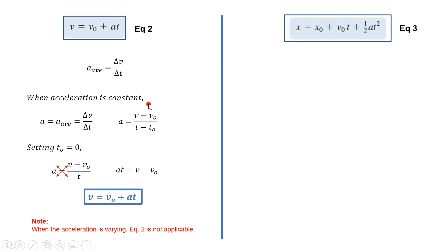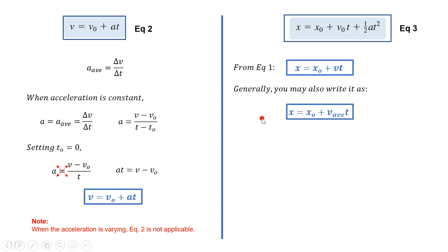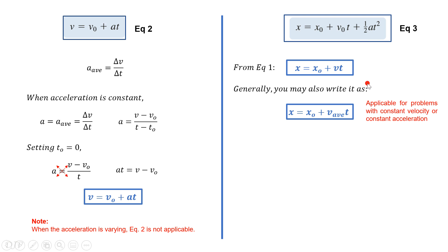This time, let's derive the third kinematic equation. Let's begin by noting that from the first kinematic equation, final position is equal to initial position plus velocity times time, which you may also write in the form emphasizing that the velocity in the formula can be expressed as average velocity. This is also applicable for motion with constant acceleration. It follows that the third kinematic equation is only applicable for motions with zero acceleration or constant acceleration.